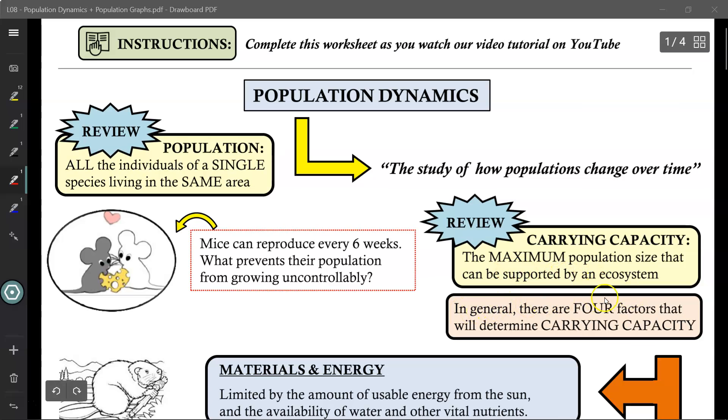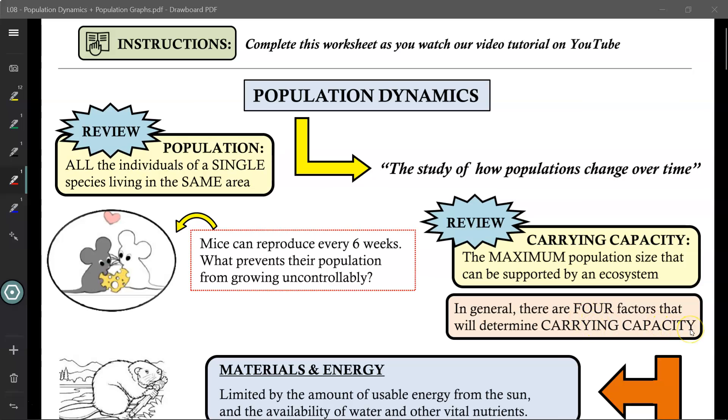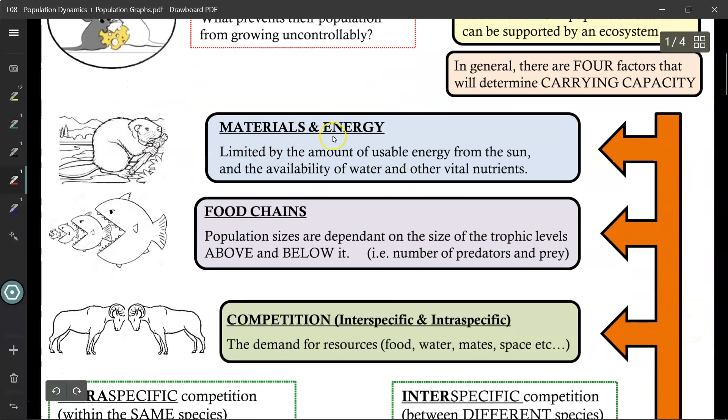In general, there are four factors that will determine carrying capacity. The first factor is materials and energy. Populations are limited by the amount of usable energy from the sun and availability of water and other vital nutrients in that ecosystem. The more materials and energy they have, the higher the population that can be supported.